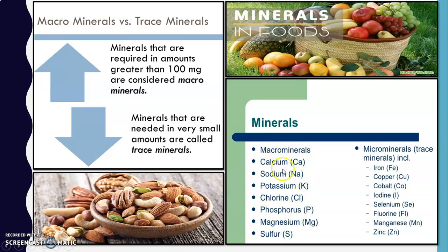On the other hand, trace minerals are required in a very small amount in the food. These include iron, copper, cobalt, iodine, selenium, fluorine, manganese, and zinc. The chemical formulas for these minerals are something you will study in your higher classes.